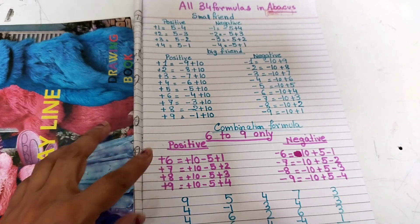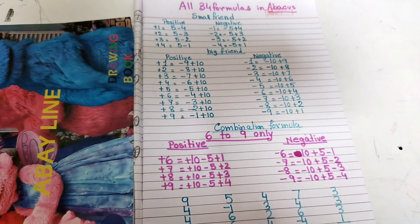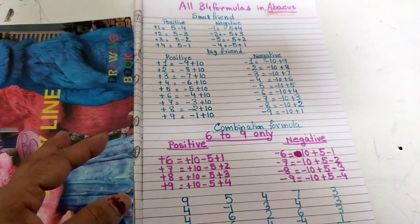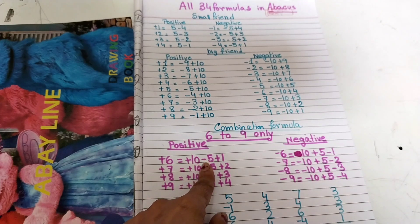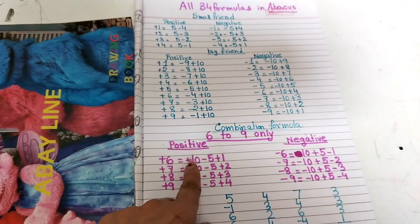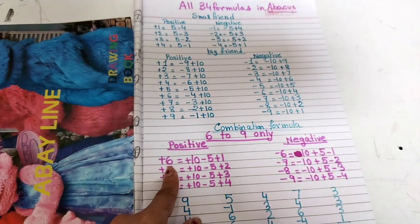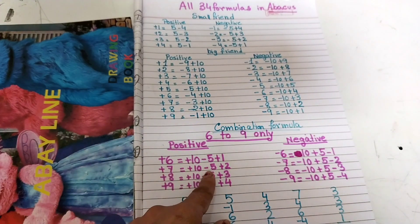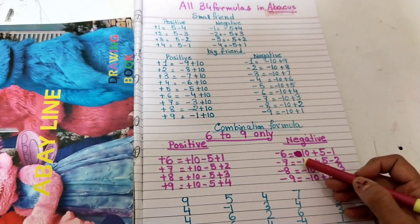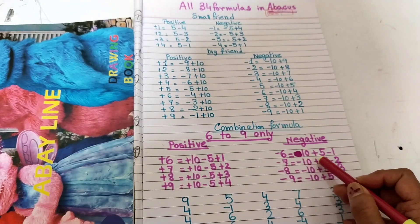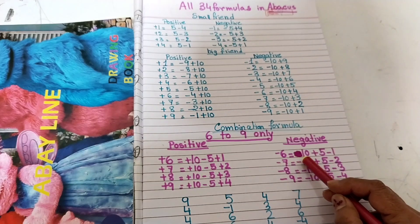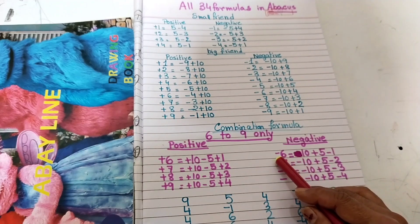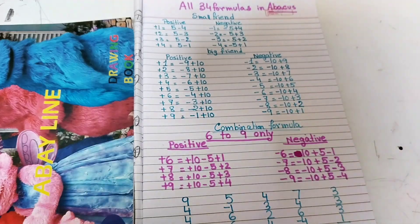When we make the combination formula, we add the small friend formula and big friend formula together. For example, plus 6 equals plus 10 minus 5 plus 1 — 5 is the small friend and 10 comes from the big friend. Plus 7 equals plus 10 minus 5 plus 2. For minus 6 equals minus 10 plus 5 minus 1, because 5 minus 1 equals 4 and 10 minus 4 equals 6, so we write the minus symbol before 6.